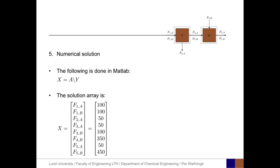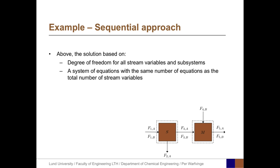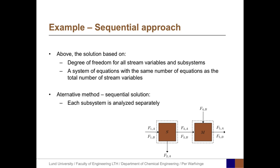The fifth step is to make the numerical solution, which involves defining matrix A and matrix Y in MATLAB, and then x can easily be calculated. We now look at another approach — the sequential approach. Above, the solution was based on a degree of freedom analysis including all stream variables and all subsystems, with the same number of equations as stream variables. In the sequential method, each subsystem is analyzed separately, beginning with one subsystem that can be solved, and then using those results to solve for the other subsystem.